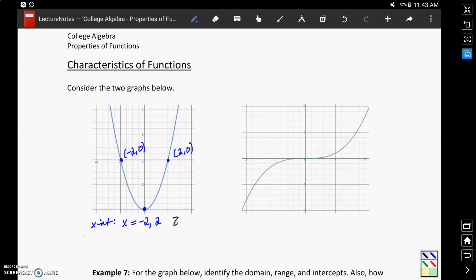Keep in mind we can also refer to these as zeros of our function since they're values of x such that f of x equals 0, meaning our function value is equal to 0.